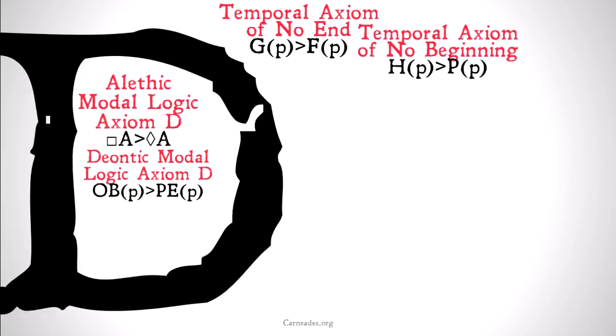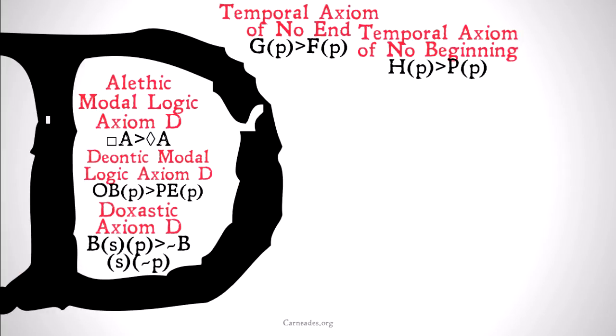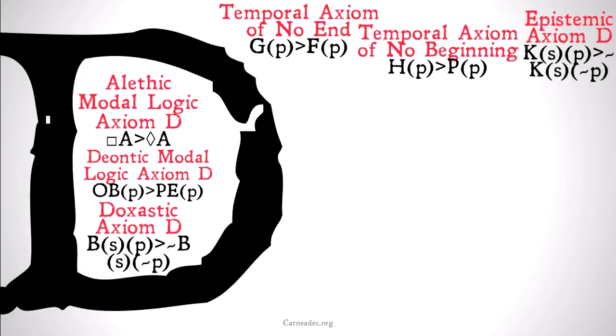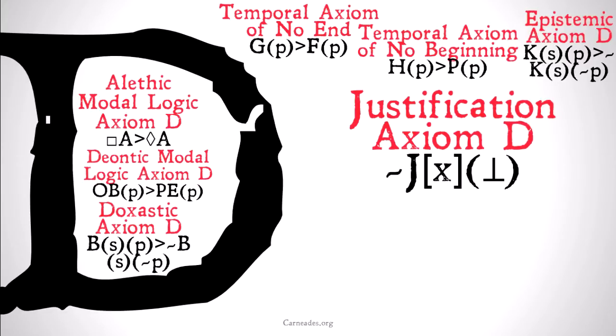We've seen a lot of different versions of axiom D throughout our series on modal logic: alethic modal logic, deontic modal logic, doxastic, temporal, and epistemic modal logic.